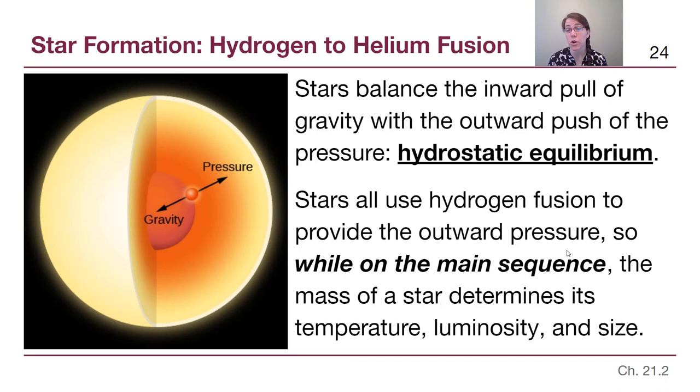Now because stars are all using hydrogen fusion to provide that outward pressure, once we know the amount of mass it has, there is a defined temperature, luminosity, and size that it is able to have while it is going through that fusion process on the main sequence. This is why that main sequence is such a thin and narrow band through the Hertzsprung-Russell diagram is because of hydrostatic equilibrium setting limits on what stars are able to look like.